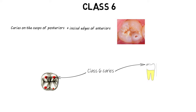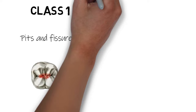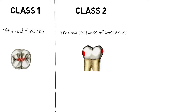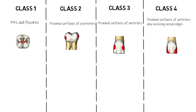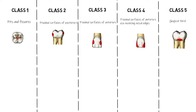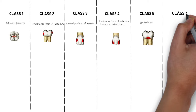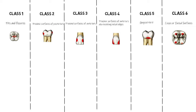Here is a quick overview of all the classes. Class 1: caries lesions of the pits and fissures. Class 2: caries lesions on the proximal surfaces of the posterior teeth. Class 3: lesions on the proximal surfaces of the anterior teeth. Class 4: lesions on the proximal surfaces that also involve the incisal edges of the anteriors. Class 5: lesions on the cervical or gingival third of the facial or lingual surface of any tooth. Class 6: lesions involving the cusps and incisal edges — in other words, surfaces that come in contact with the opposing tooth.